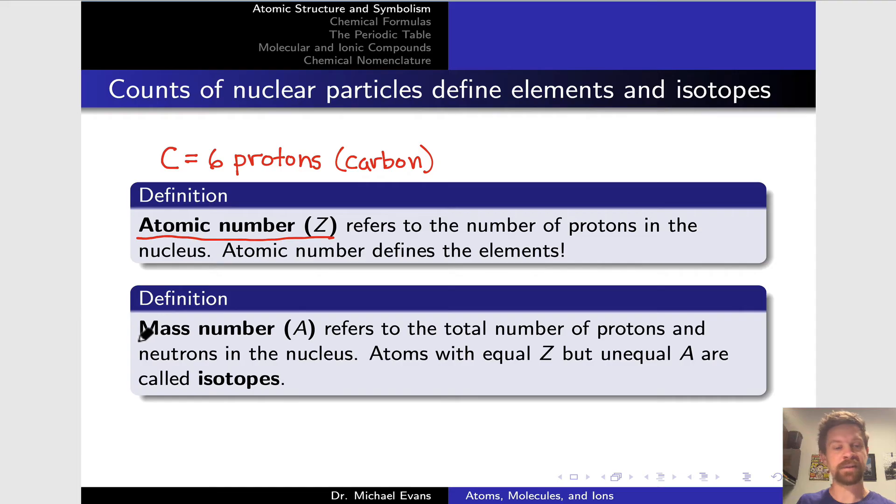We also talk about the mass number, typically given the letter A. Mass number refers to the total number of protons and neutrons in the nucleus, the total number of nucleons. Elements are defined by their atomic numbers, but can differ in mass number. Atoms of the same element can differ in their numbers of neutrons. This leads to a difference in mass number with equality in atomic number. Atoms in that situation are called isotopes, and we'll look at isotopes in more detail a bit further down the line.